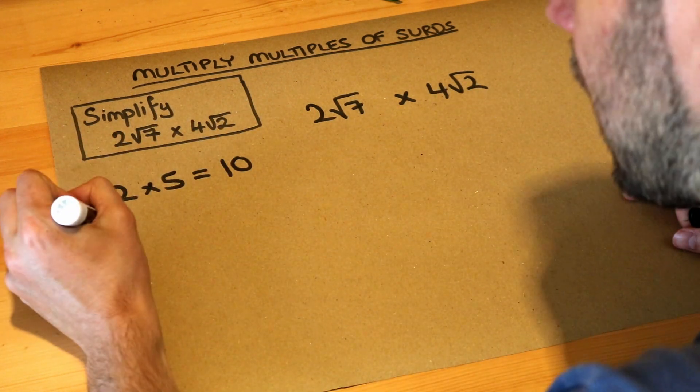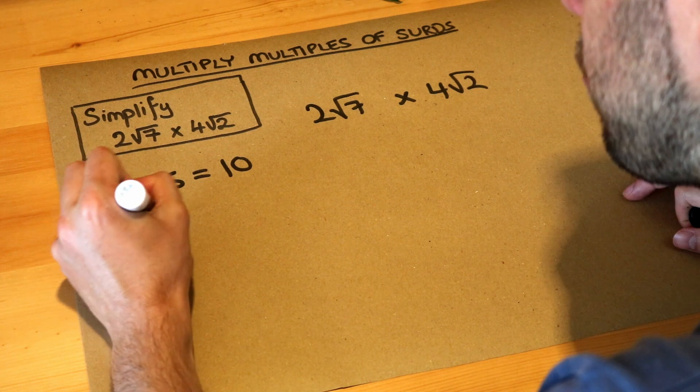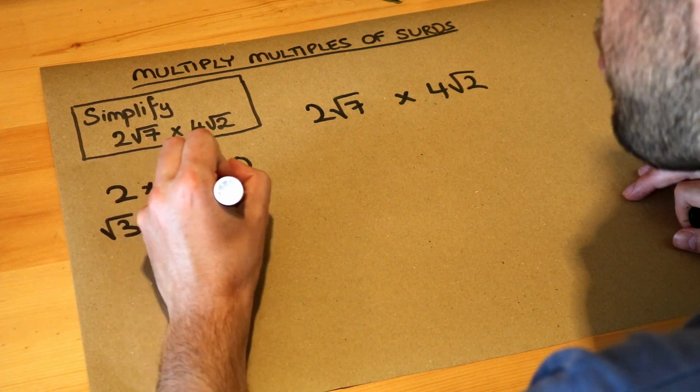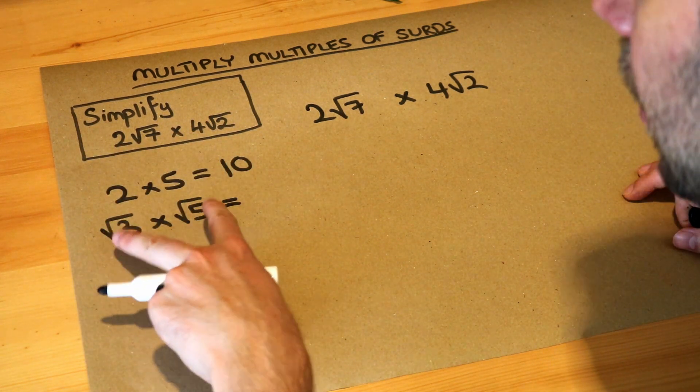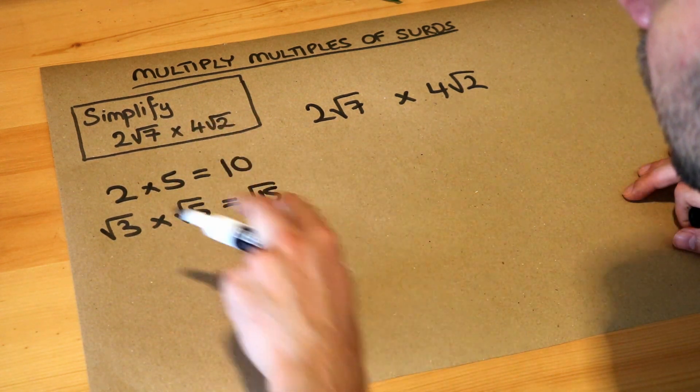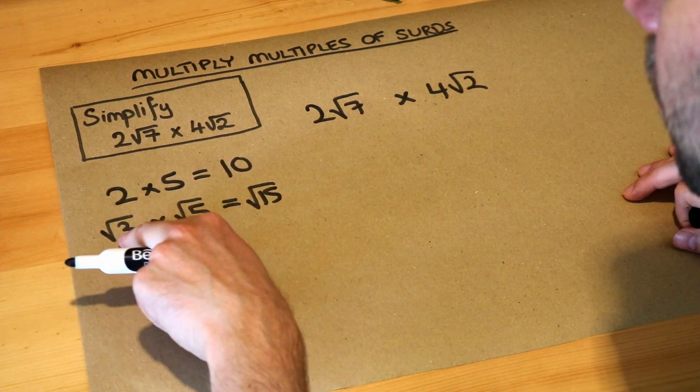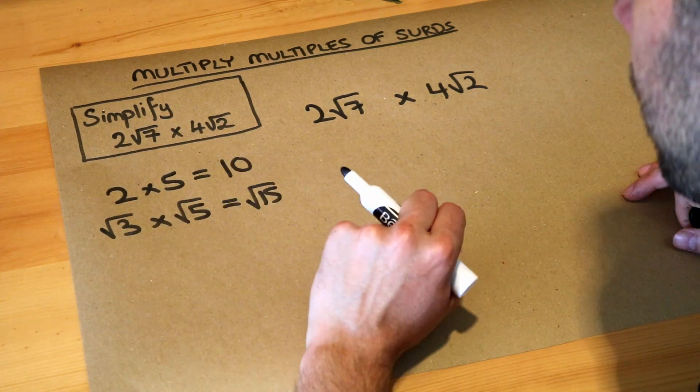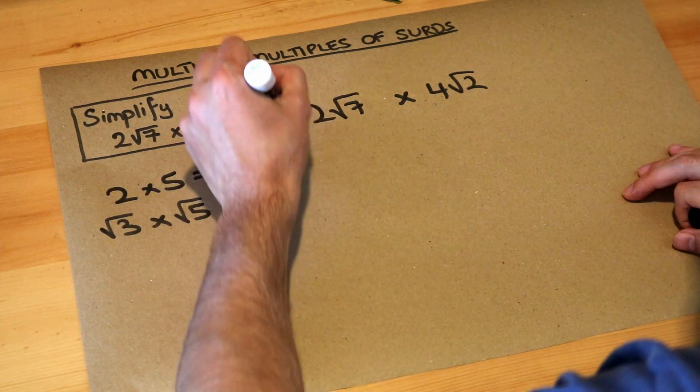And you can multiply surds together, so if I had say root three times root five, we saw in a previous video when you have a surd times a surd you just multiply the three and the five together - three times five is root 15. So we can multiply non-surds together, we can multiply surds together to simplify, and that's what we're going to do here.